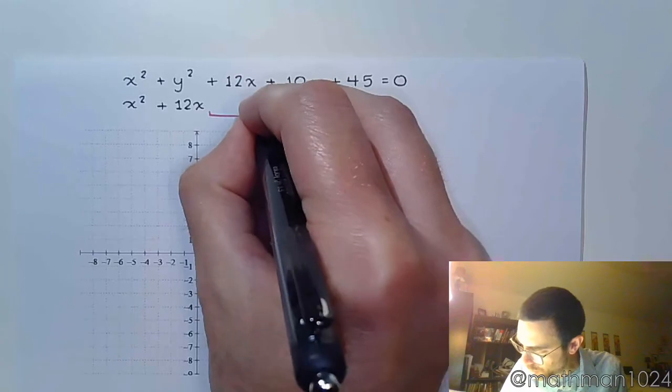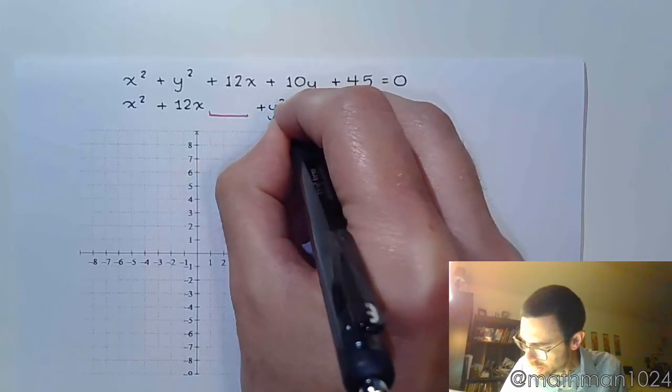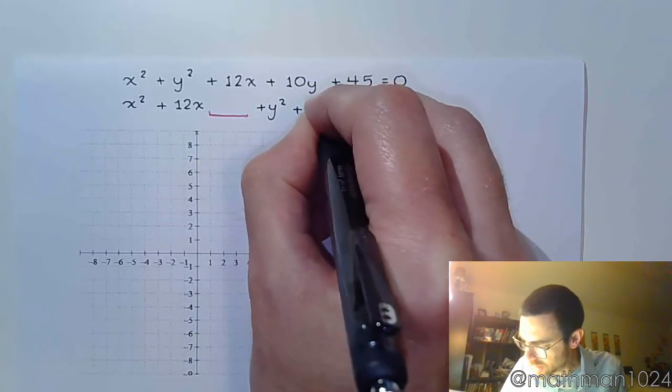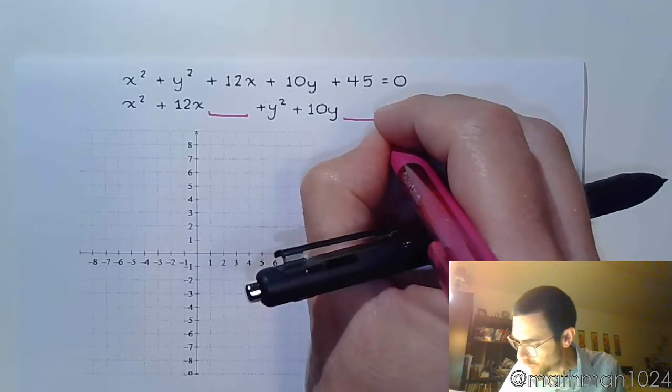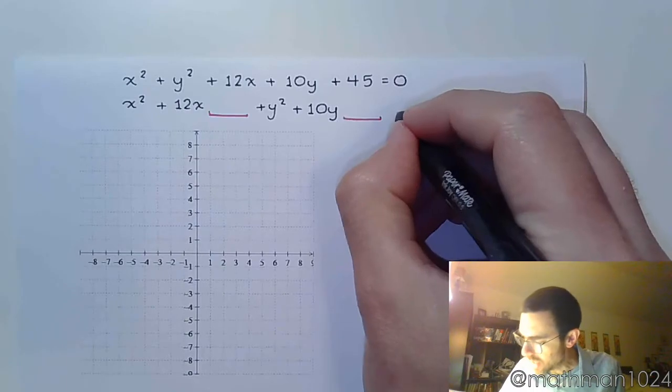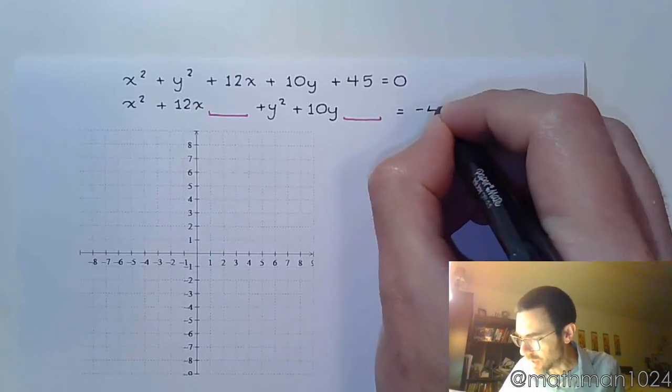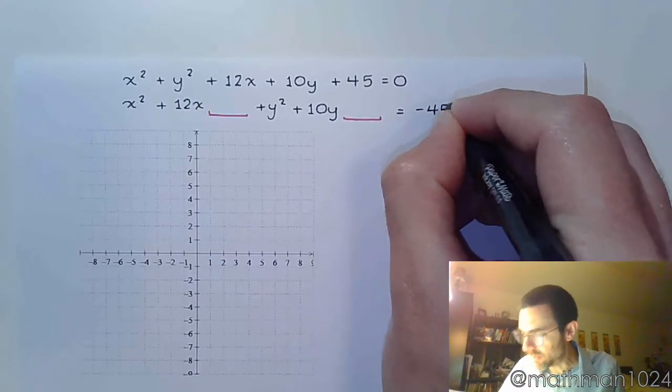And then I have y squared, that's plus 10y. And I'm going to leave a gap for that guy as well. And I'm going to move that 45 to the other side so it becomes a negative 45.